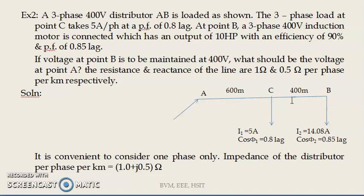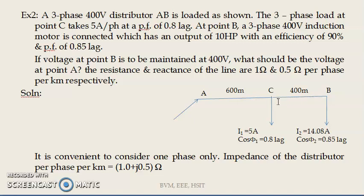In other words, VA equals VB plus the voltage drop in section CB plus the voltage drop in section AC. To get the voltage drop in section CB, you multiply the current in section CB by its impedance: ZCB multiplied by ICB. ICB is I2, which I have written here as 14.08 amps. I will now show how to obtain this value.